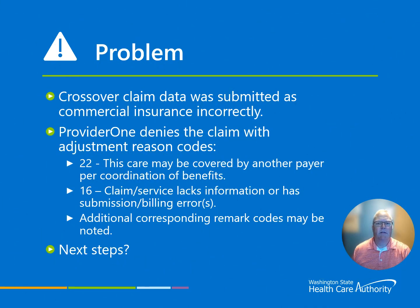With many of these denials, the problem stems from an electronic claim received in Provider One with Medicare data contained in the commercial payer area. Provider One will deny your claim assuming there is a commercial payer and behave as such when it adjudicates. Provider One denies the claim with either a 22 or a 16 adjustment reason code. There may be other remark codes listed as well.